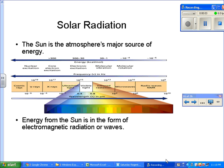So here's part two of the review. Solar radiation - the Sun is the atmosphere's major source of energy. Energy from the Sun is in the form of electromagnetic radiation or waves.